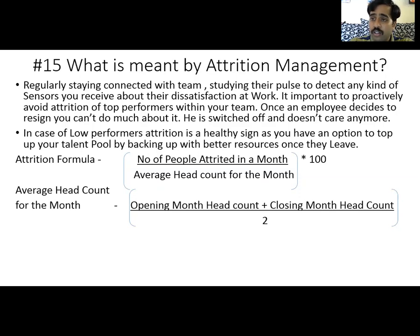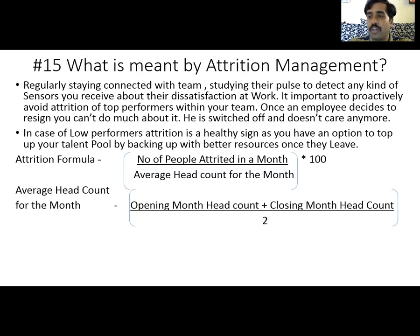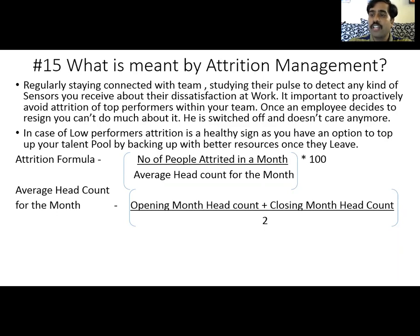There are two types of attrition. One is positive attrition — that is healthy attrition — and the second one is unhealthy attrition. When your top performers, your top cream in your team, leave you, that is unhealthy attrition. However, when you have bottom performers or low performers who decide to leave you and go to competitors, that is a very healthy sign for you. The reason being, you have an opportunity to hire better people and top up your talent pool with better resources. This way, attrition can be classified into good and bad.